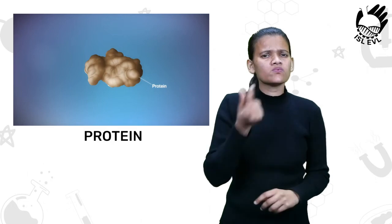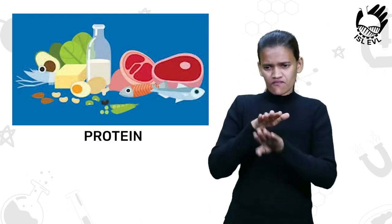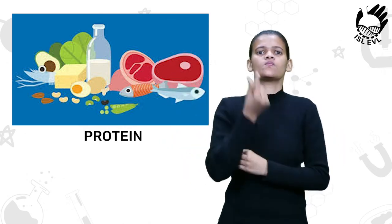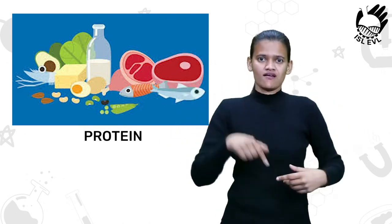Protein is a macronutrient that is essential to building muscle mass. It is commonly found in animal products, though is also present in other sources.